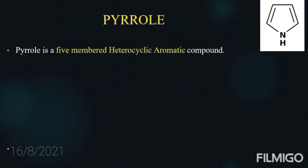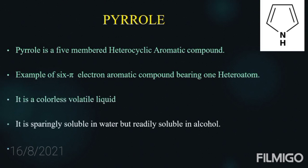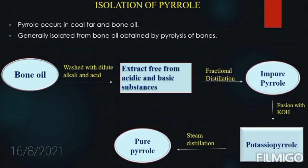Coming to pyrrole: pyrrole is a five-membered heterocyclic aromatic compound, that is, a 6π-electron aromatic compound bearing one nitrogen atom. It is a colorless volatile liquid. It is sparingly soluble in water but readily soluble in alcohol. Pyrrole occurs in coal tar and bone oil, and is generally isolated from bone oil.